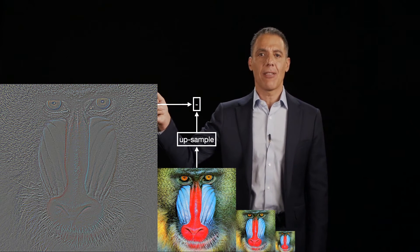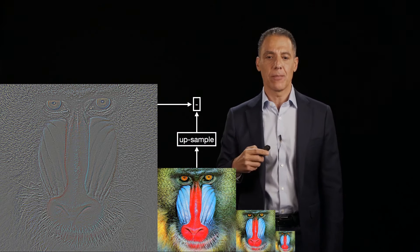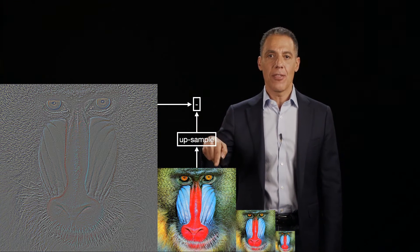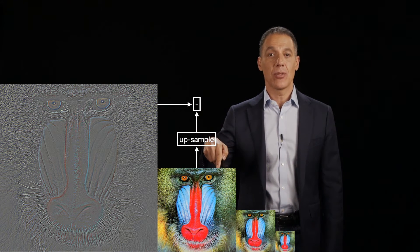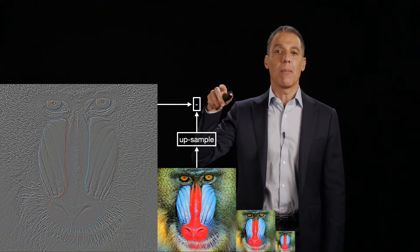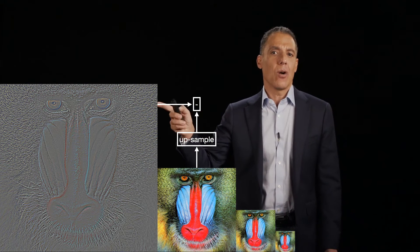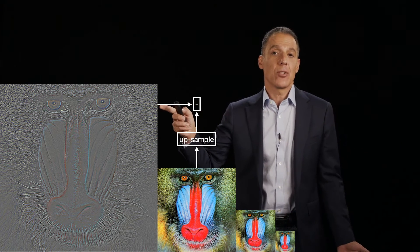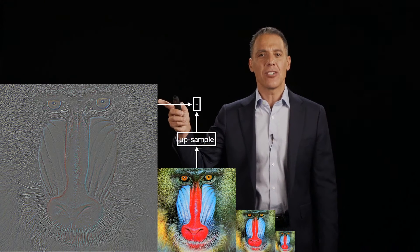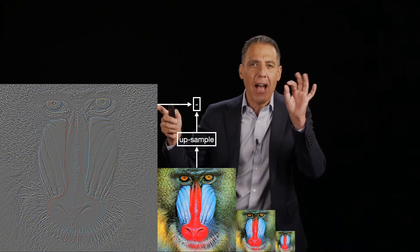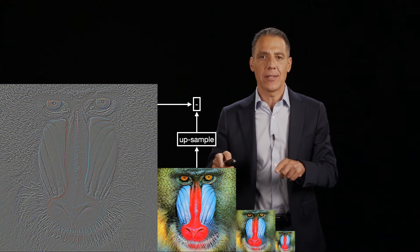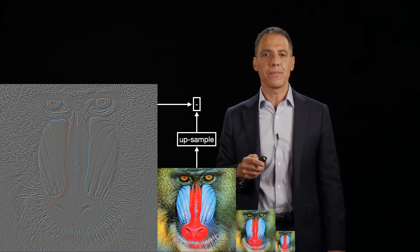It's going to look something like that right there. That's the difference between this image, which has been blurred and downsampled and then brought back up. It's whatever information was lost in that process — you can see it's all these really high-frequency details that were lost when going down this level of the pyramid.